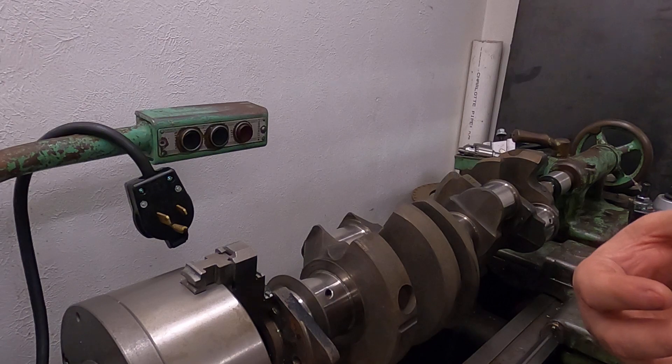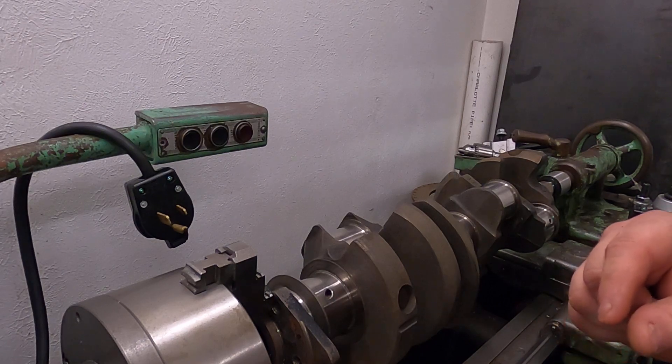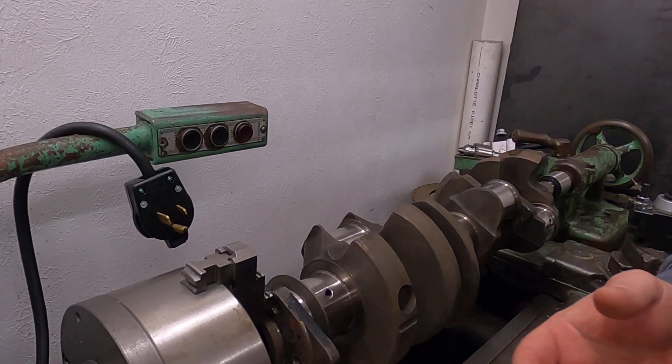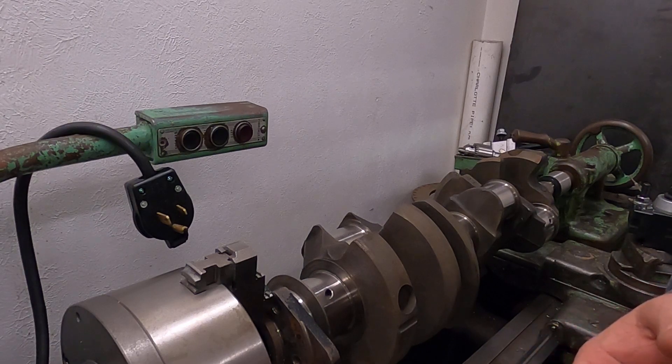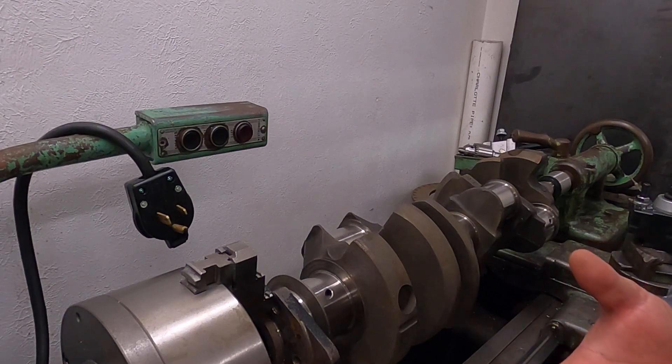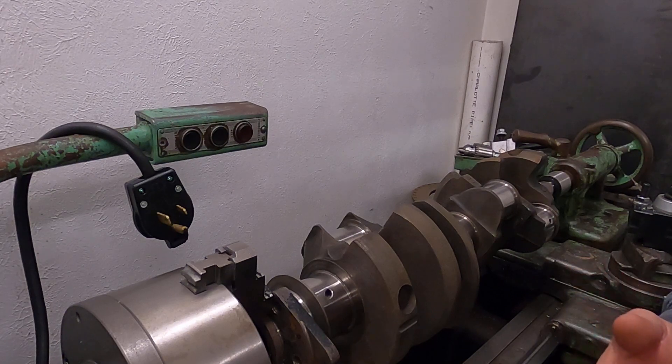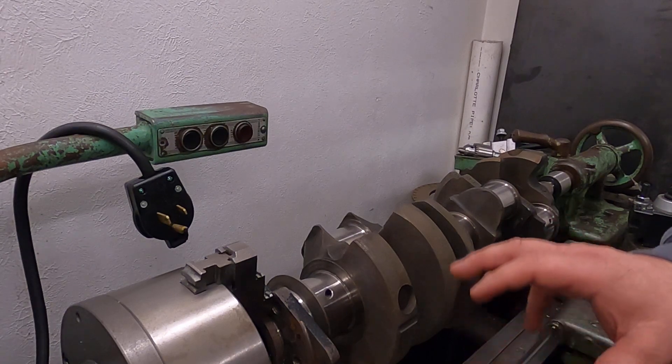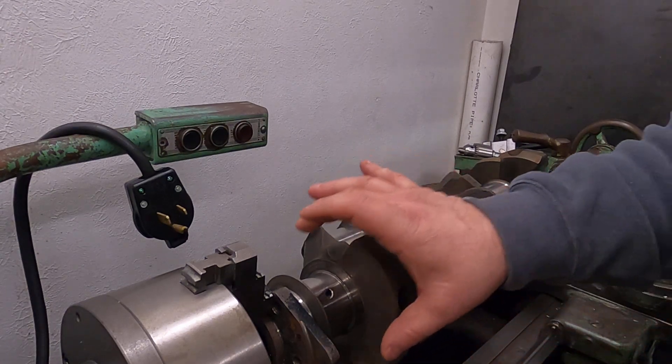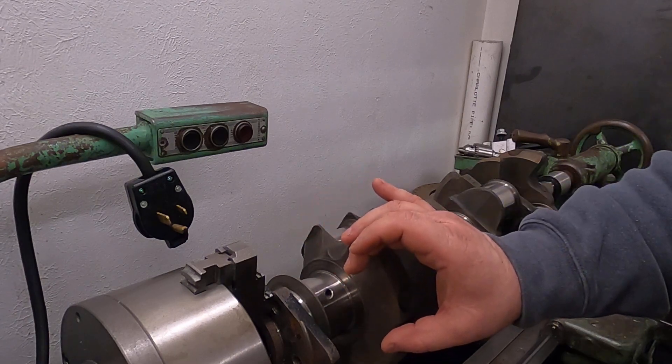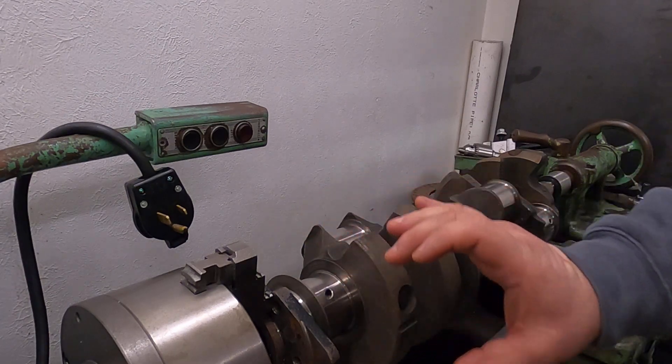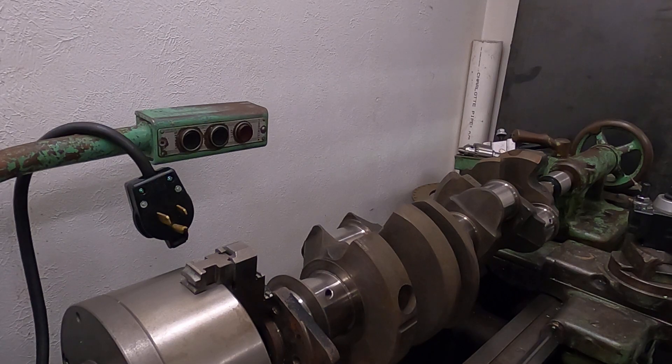I'll measure it for thickness because they vary a few tenths between each one, even though it's what everybody calls a ten-under bearing. This crank was turned ten thousandths of an inch down to true it up.